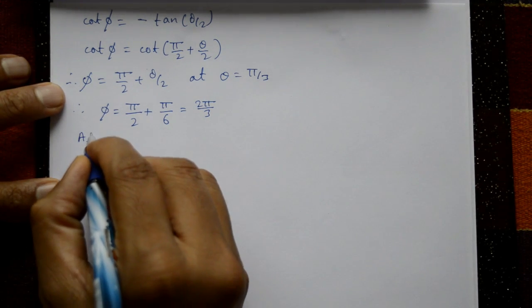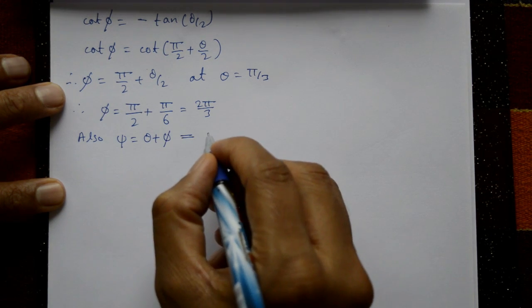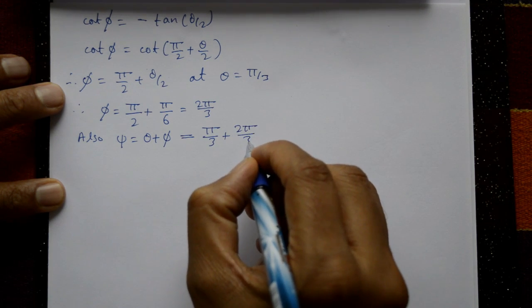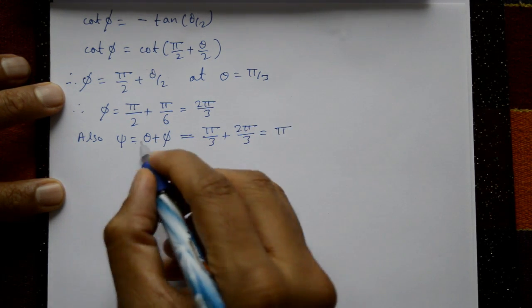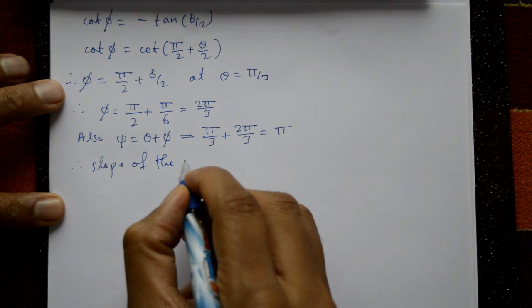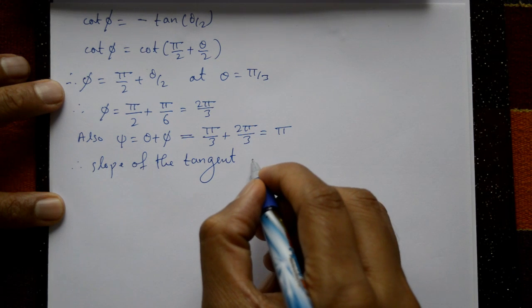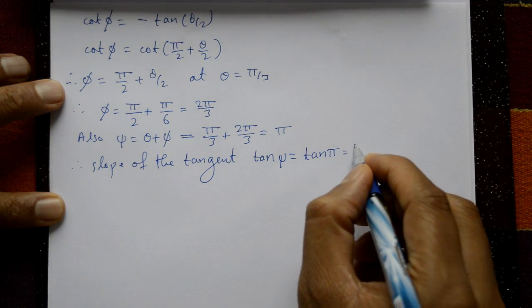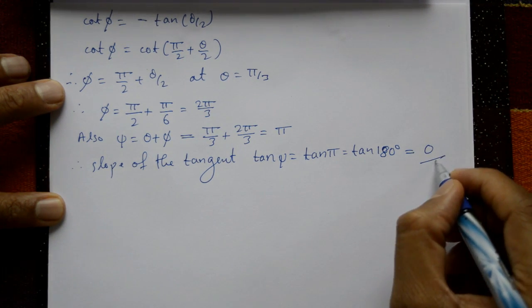Also find angle ψ: ψ = θ + φ = π/3 + 2π/3 = 3π/3 = π. Therefore slope of the tangent = tan ψ = tan π = tan 180° = 0. This is the answer.